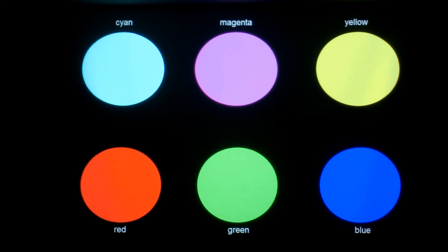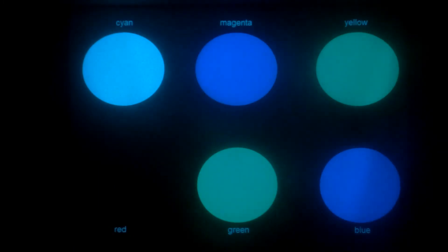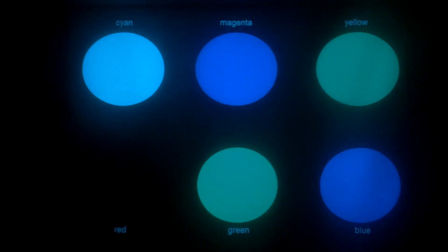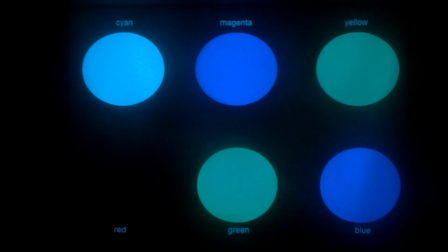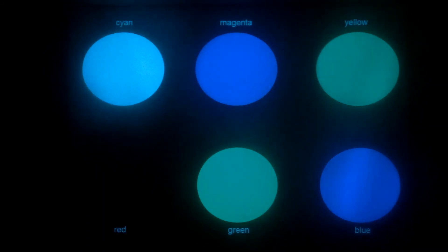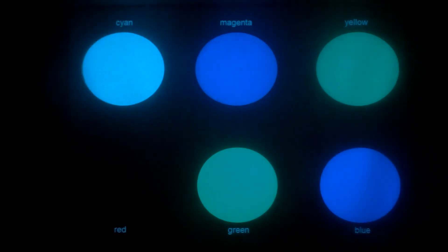And finally the cyan filter will block red and allow green and blue both to pass through. So the green and blue both appear green and blue as normal. The magenta appears blue, the yellow appears green, the cyan appears cyan, and the red goes black.